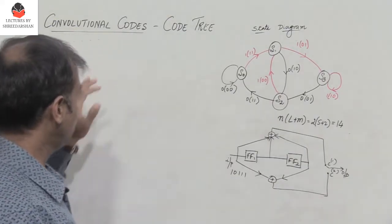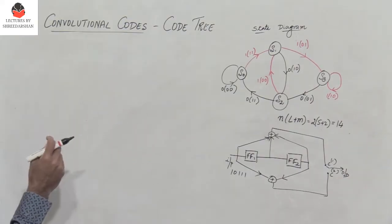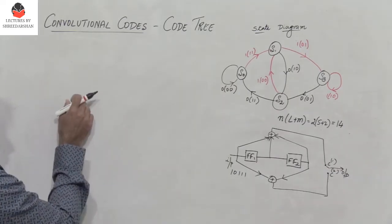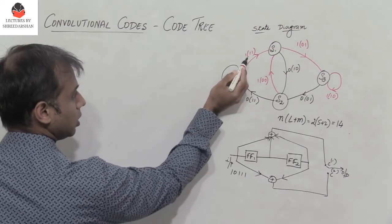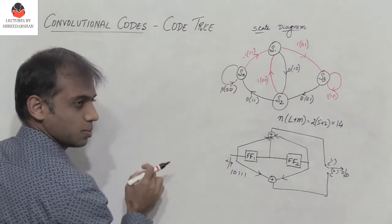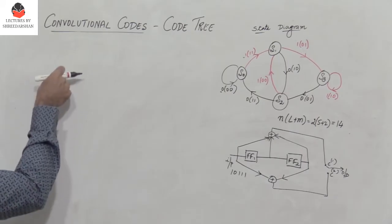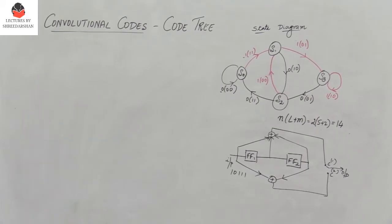Let's begin with the code tree. The key points to remember are: if the input is 0, I move up; if the input is 1, I move downwards. The label within parentheses represents the output. The vertical line represents the node, whereas the horizontal line represents the branch.